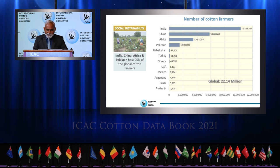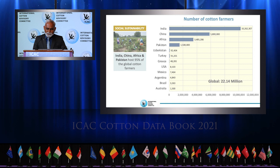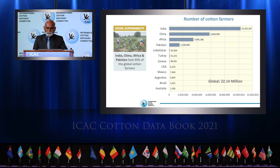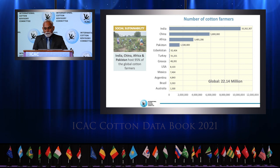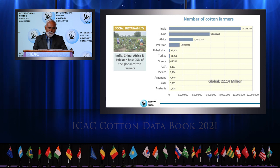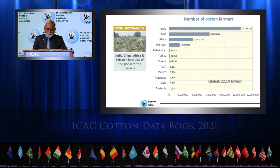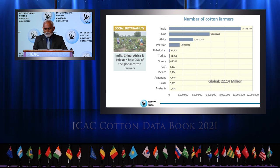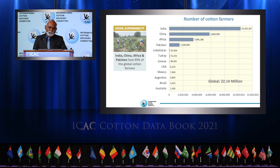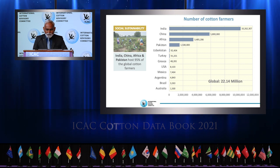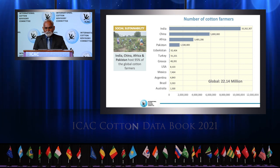In the next three slides, I'll present some aspects on social sustainability. The bars that you see here represent the number of cotton growers. More than 22 million farmers cultivated cotton in 2020. And interestingly, India, China, Africa, and Pakistan host 95% of the global cotton farmers. Cotton farming provides sole income and supports livelihood, especially for the 22 million smallholders in Asia and Africa.